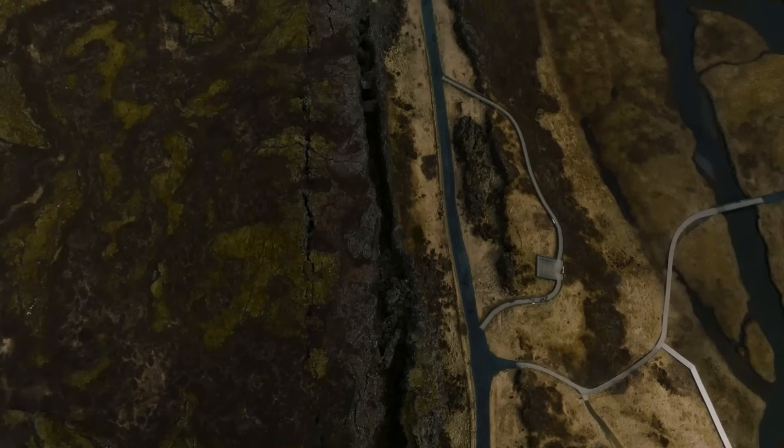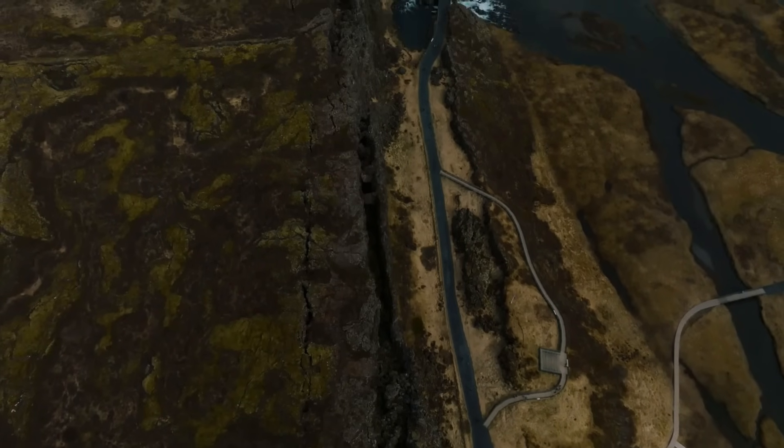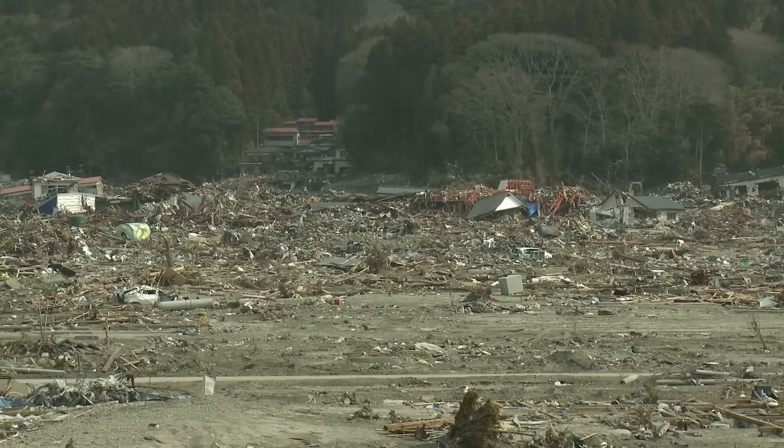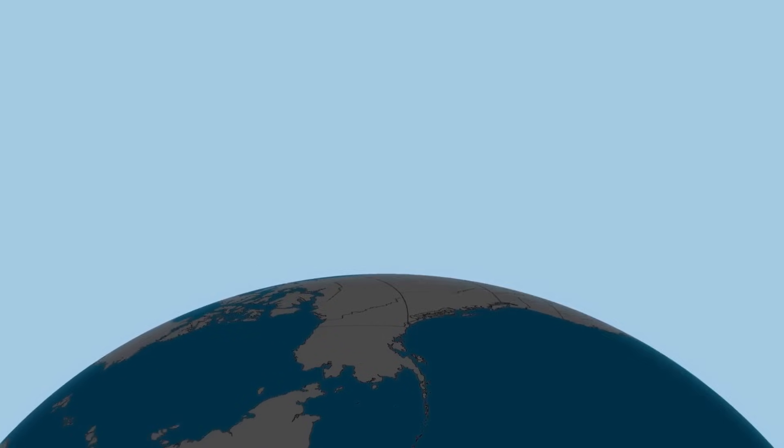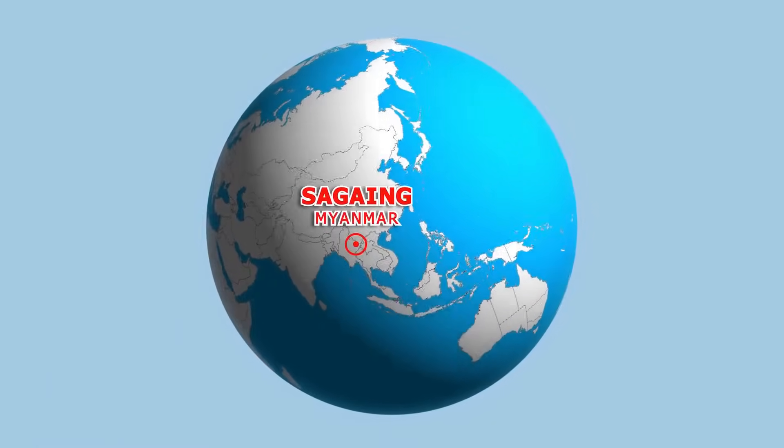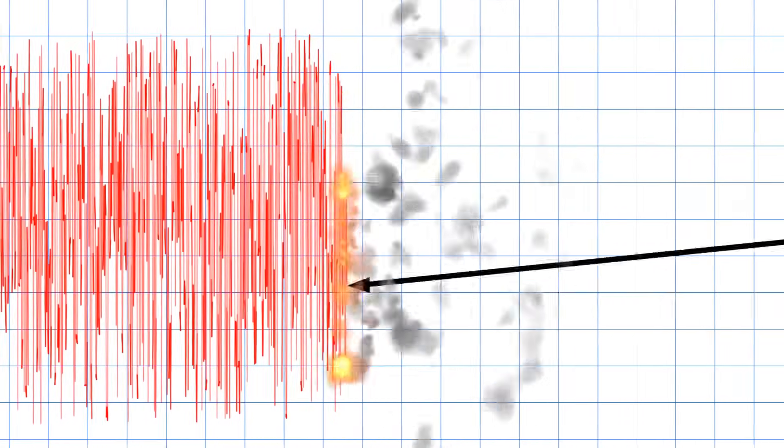To the south, the Sunda megathrust, off the coast of Sumatra, marks one of the most active subduction zones on the planet. This zone produced the catastrophic 2004 Indian Ocean tsunami. Even closer, Myanmar's Sagang fault, a large strike-slip fault, is known to produce powerful quakes. The seismic energy released in those regions doesn't stop at borders.